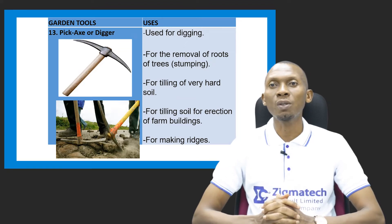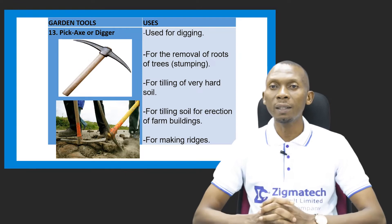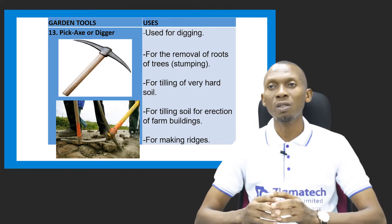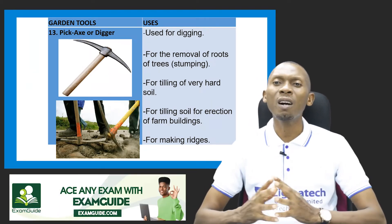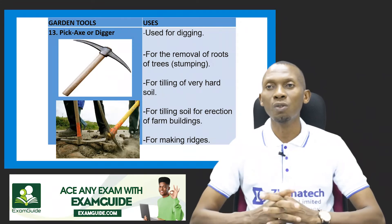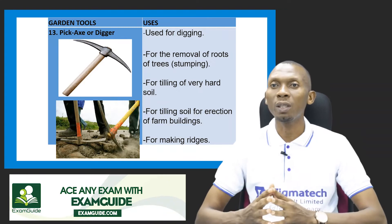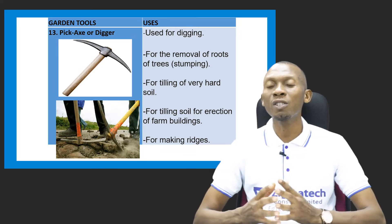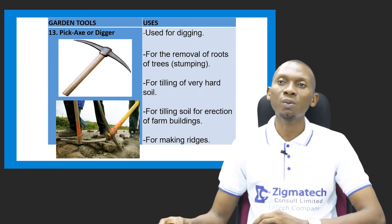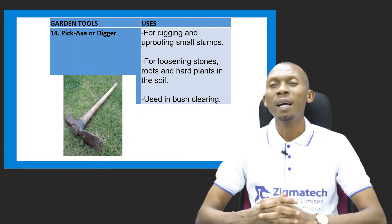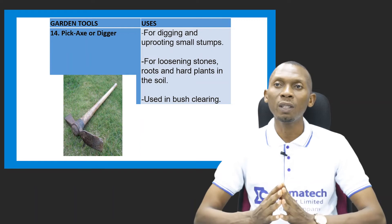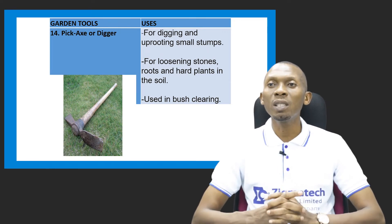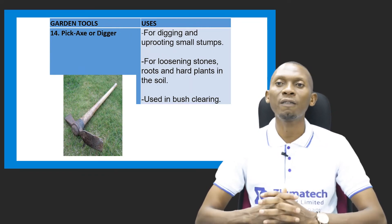We have the pickaxe, which is also called the digger. It is used for digging, and also for removal of roots of trees — the stump. It can also be used for tilling very hard soil — tilling means breaking up compact soil into clods or lumps — for tilling soil for erection of farm buildings, for making ridges, for digging and uprooting small stones, and for bush clearing.